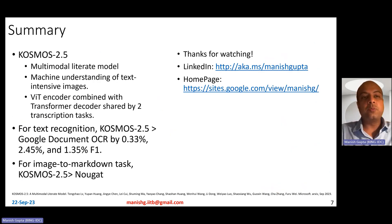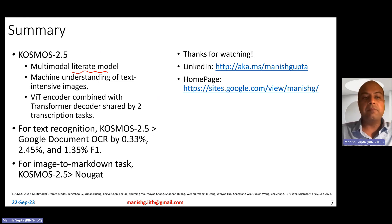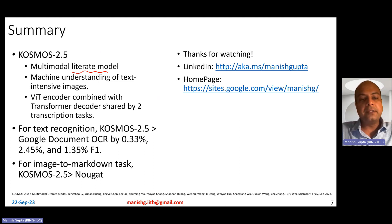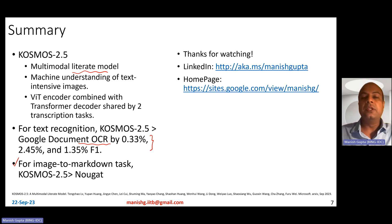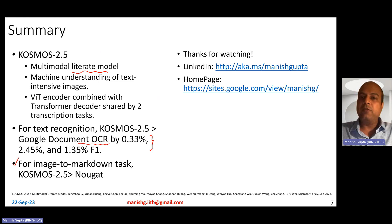In summary, in this video I talked about Cosmos 2.5, a multimodal literate model useful for machine understanding of text-intensive images. It involves a ViT encoder combined with a perceiver resampler combined with a transformer decoder shared by two different transcription tasks. For text recognition, Cosmos 2.5 is better than Google Document OCR by multiple F1 points across three datasets. For image-to-markdown, it is better than Nougat. Hope you liked the video — thank you for watching. Connect with me on LinkedIn or look at my research on my homepage.